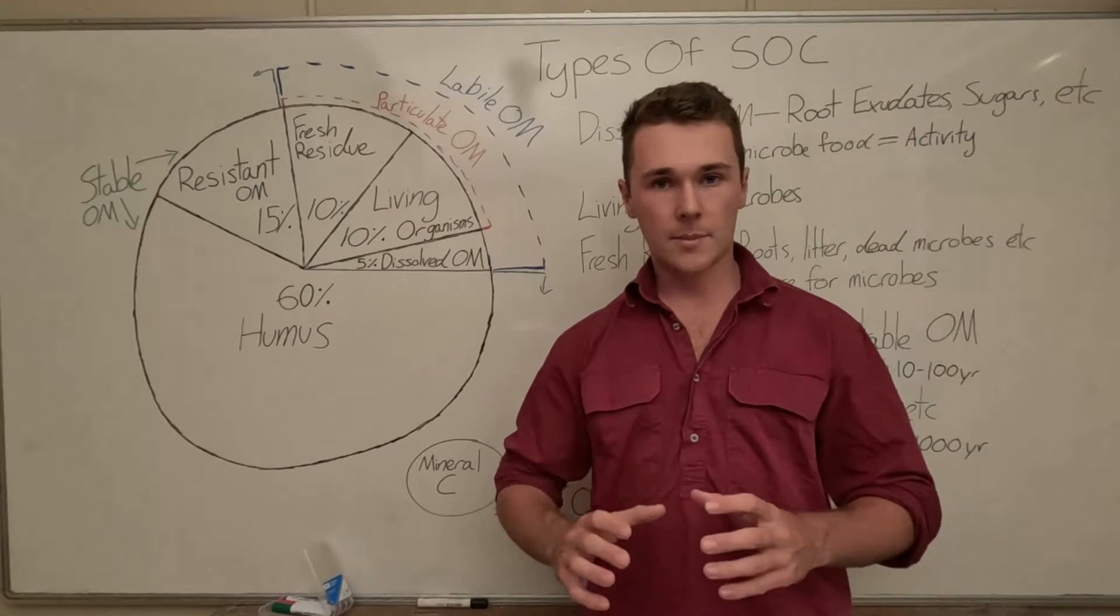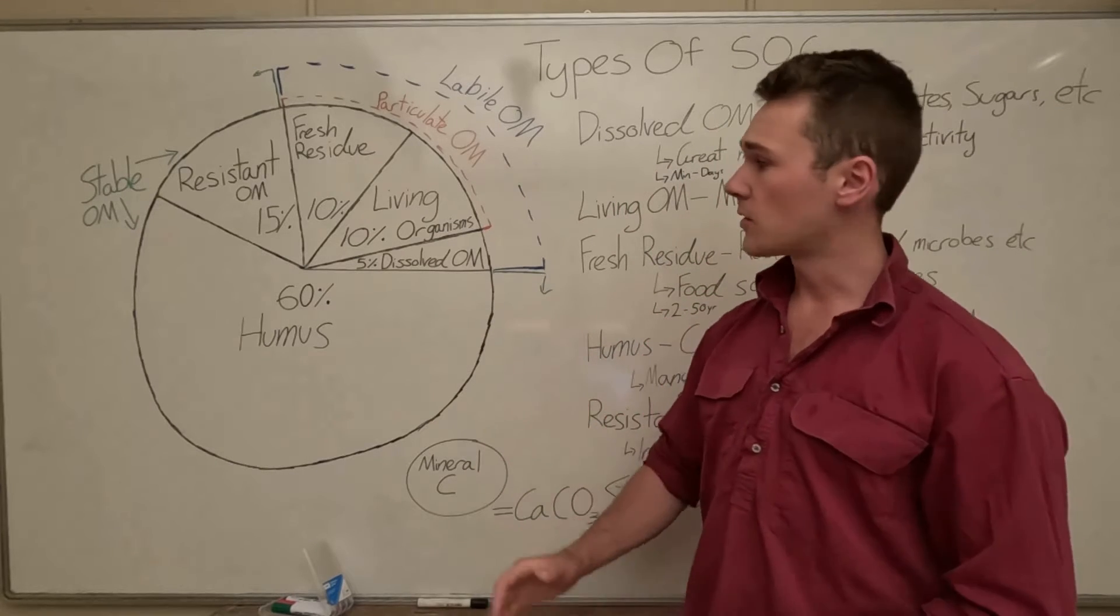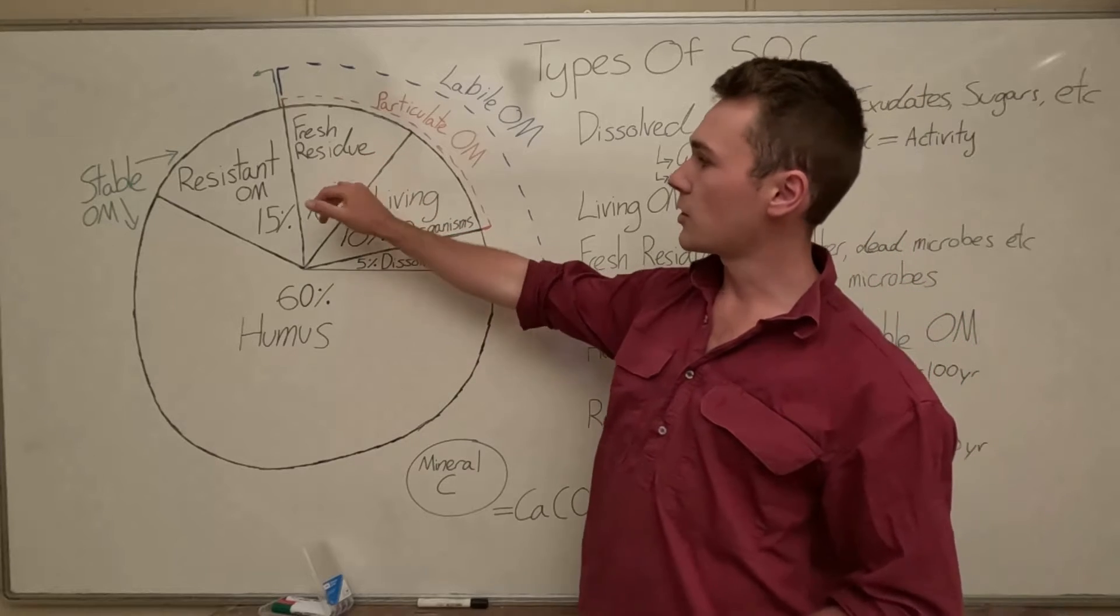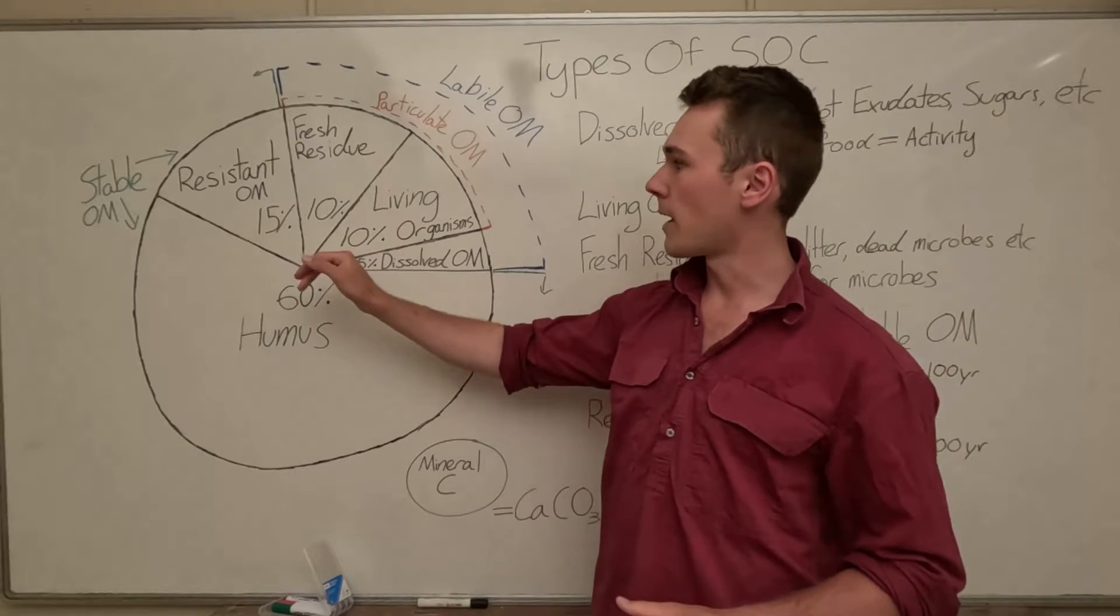So soil organic carbon as a whole is made up of a range of different factors. So they include dissolved organic matter, humus, living organisms, fresh residue and resistant organic matter.